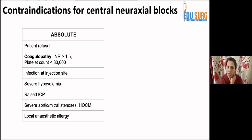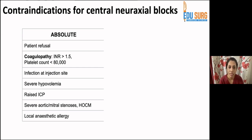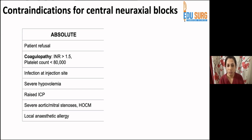Severe hypovolemia — such as hemorrhagic shock or severe dehydration — is an absolute contraindication because it will cause massive cardiovascular collapse. Raised ICP is contraindicated because drawing CSF or injecting any drug directly affects intracranial pressures and may cause coning. Severe stenotic valvular diseases like aortic and mitral stenosis are fixed-output states and patients will not tolerate hypotension; similarly, hypertrophic obstructive cardiomyopathy is contraindicated.